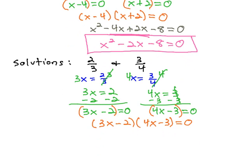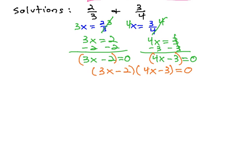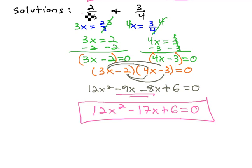Running out of space, so I'm going to scroll down. So to find our polynomial, we just multiply this out using FOIL. We have 12x squared minus 9x minus 8x plus 6 equals 0, and then combine the like terms in the middle to give us 12x squared minus 17x plus 6 equals 0. This is the equation that has solutions 2 thirds and 3 fourths.